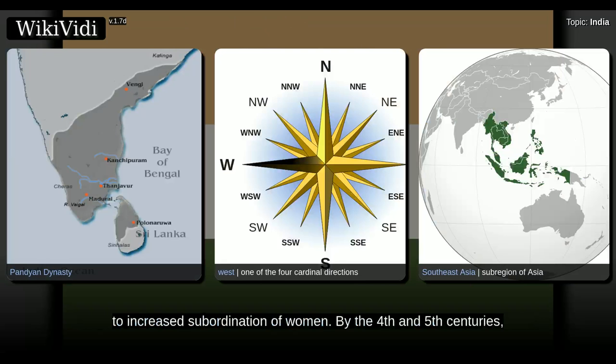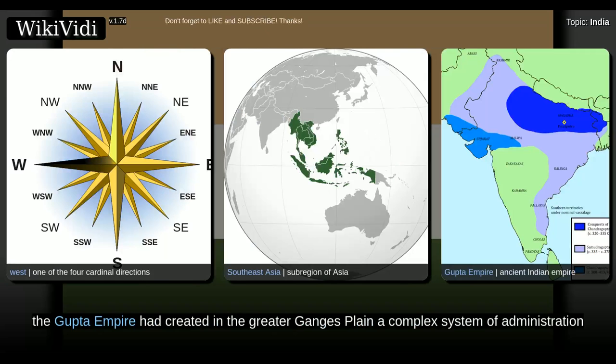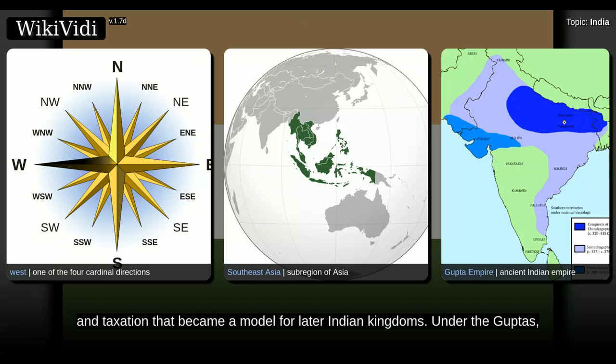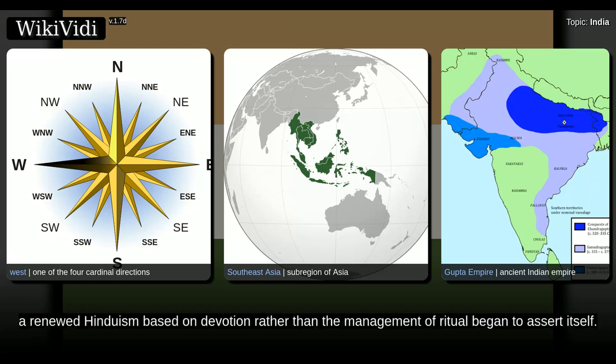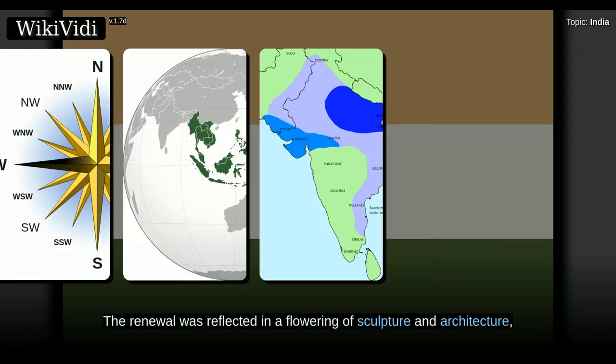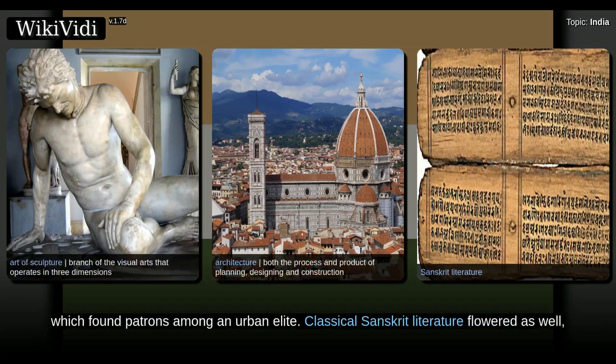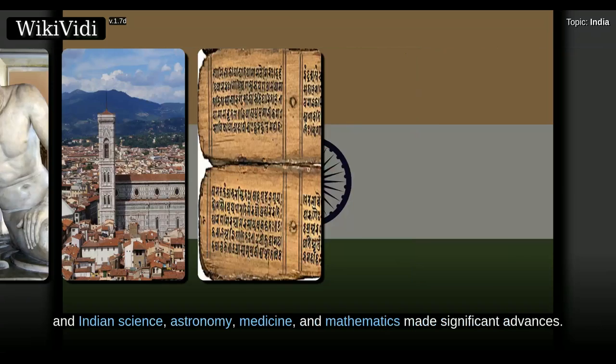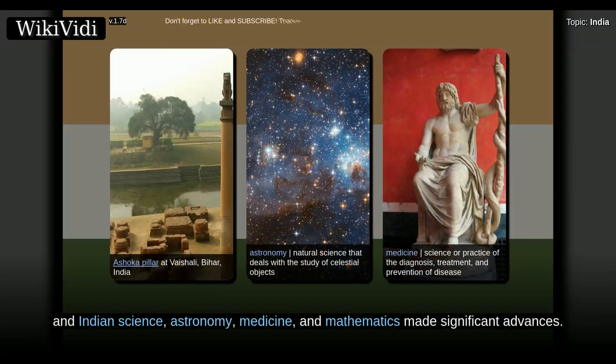By the 4th and 5th centuries, the Gupta Empire had created in the greater Ganges plain a complex system of administration and taxation that became a model for later Indian kingdoms. Under the Guptas, a renewed Hinduism based on devotion rather than the management of ritual began to assert itself. The renewal was reflected in a flowering of sculpture and architecture, which found patrons among the urban elite. Classical Sanskrit literature flowered as well, and Indian science, astronomy, medicine, and mathematics made significant advances.